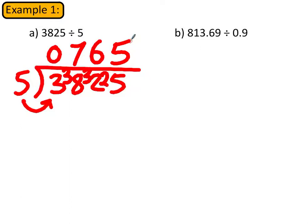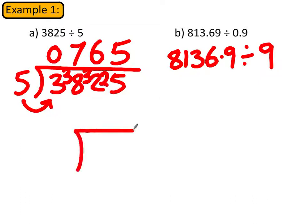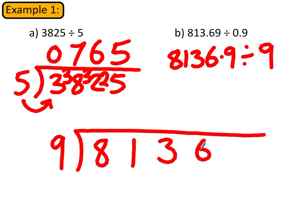So this is equivalent to 8136.9 divided by 9, and this is an easier question to do. So this is how we're going to write out our bus stop method. We're going to have 9 there, 8136.9 is going to go there.